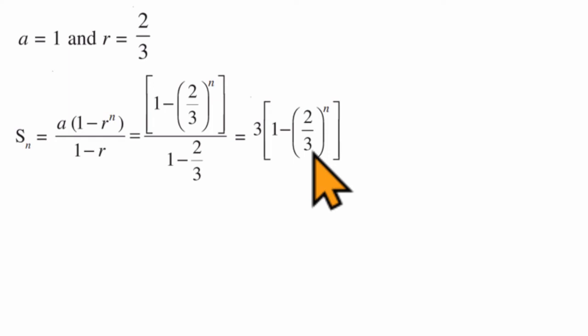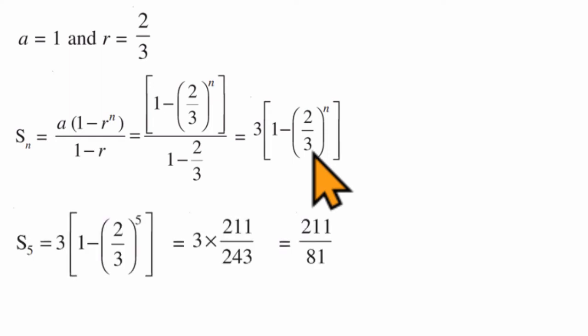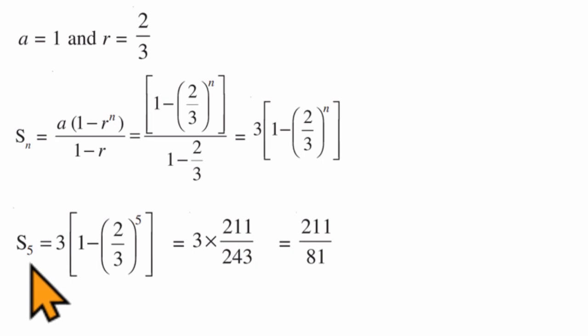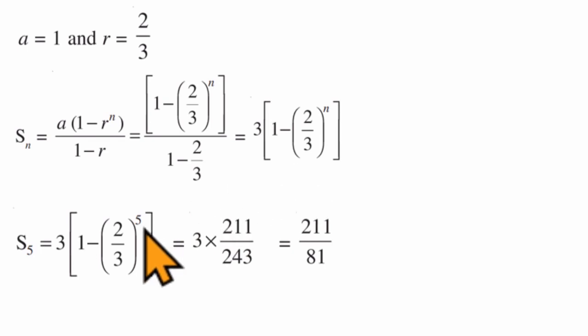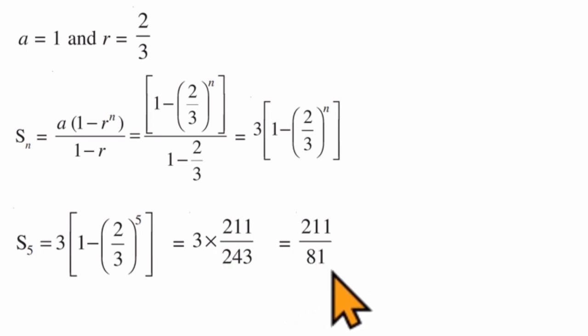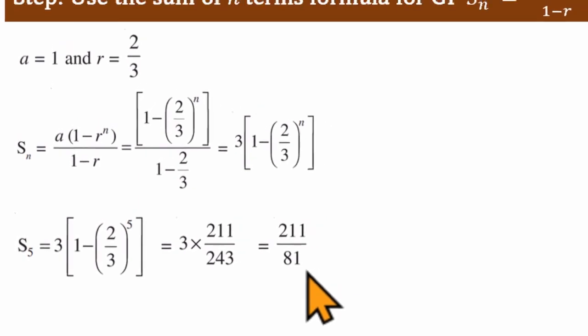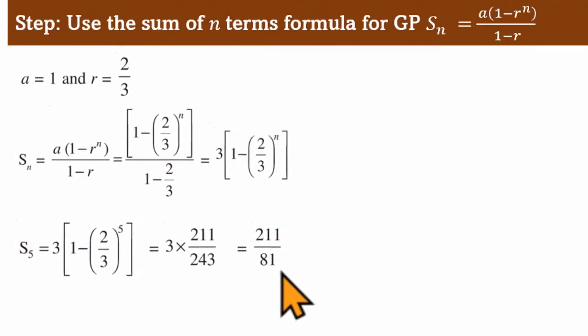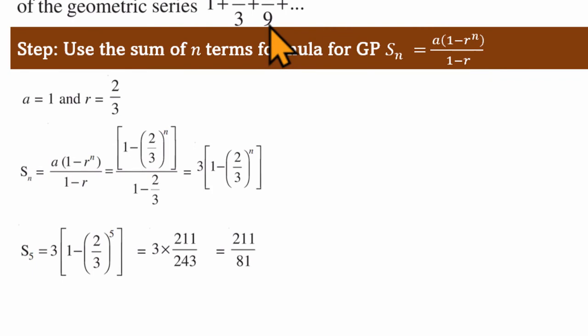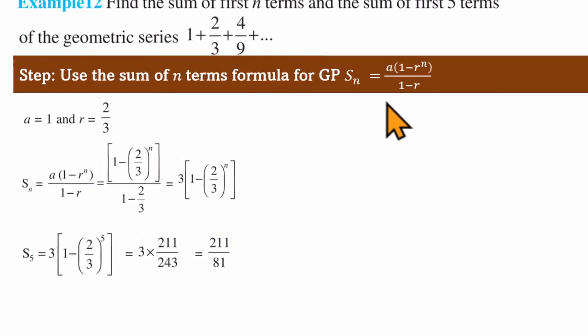The second part of the question asks us to find the sum to 5 terms. We substitute n equals 5 into the formula and solve to get 211 divided by 81. This is a straightforward application of the geometric progression sum formula.